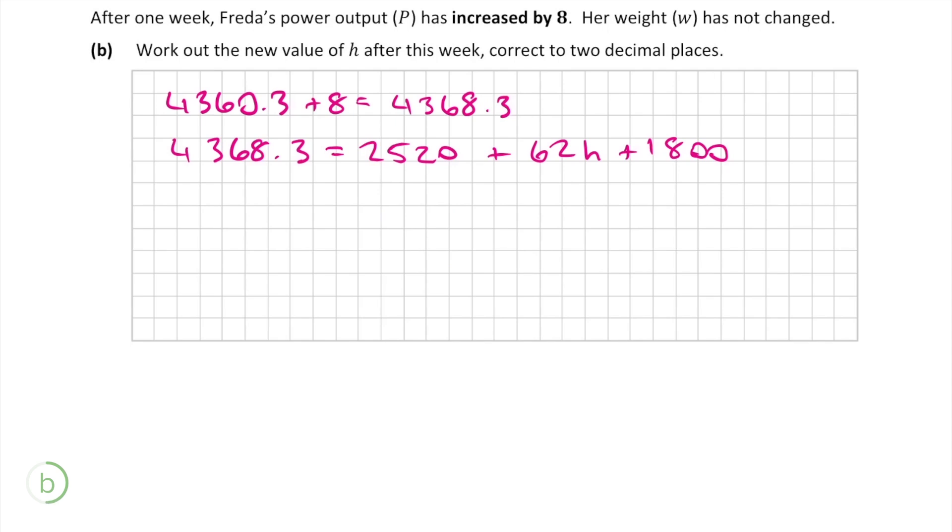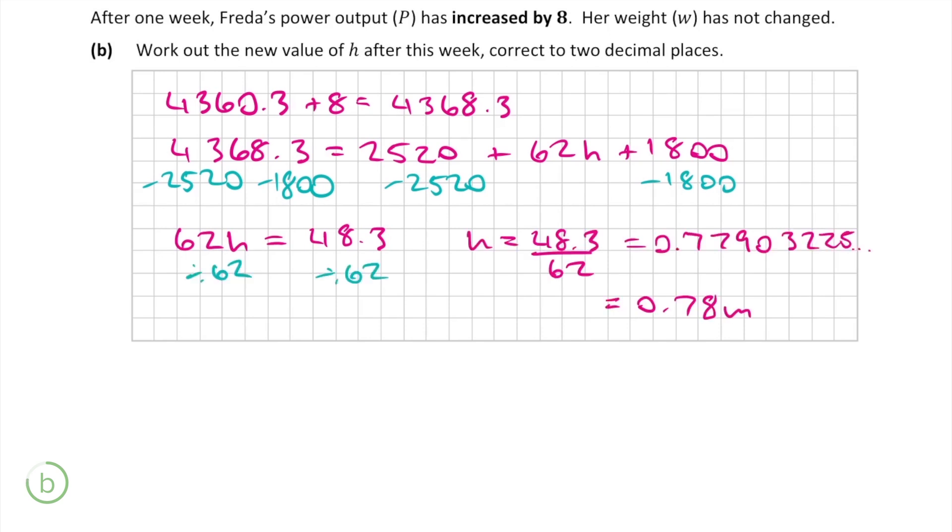To solve for h, we need to move everything else over to the other side. Now our new equation is 62h is equal to 48.3. So to find h on its own, we divide both sides by 62. Correct to two decimal places, this gives us an answer of h is equal to 0.78 meters, which is the new height that she can jump after the first week.